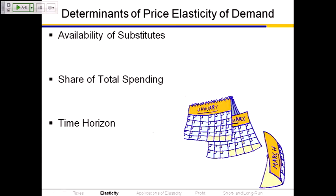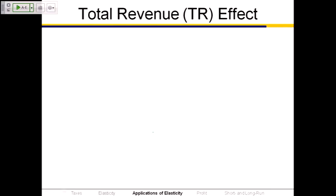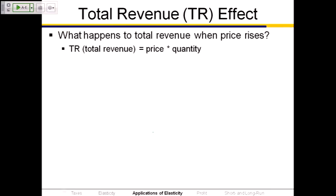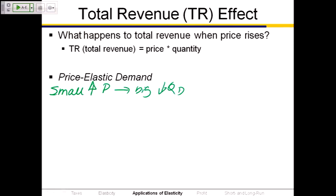Those are the three major determinants of price elasticity of demand. One application is its relationship to total revenue — price times quantity. When demand is relatively price elastic, even a small increase in price causes a big decrease in quantity demanded. The quantity effect, which decreases total revenue, overwhelms the price effect, so total revenue falls. A small decrease in price gives a big increase in quantity demanded, which increases total revenue.